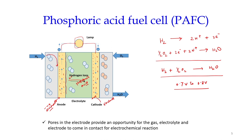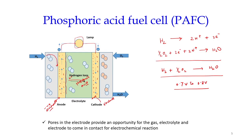Normally platinum is used as catalyst, but platinum is quite costly, so alternative materials are being developed. The electrode material for the anode is nickel and for the cathode it is silver, as these are less costly materials available to act as electrode material.